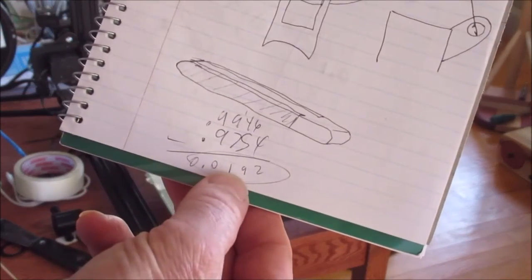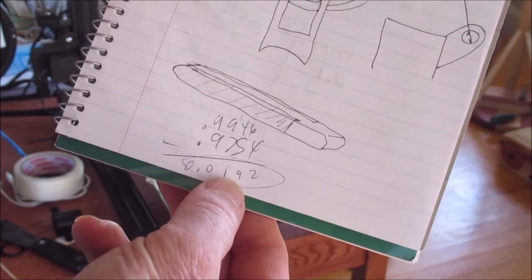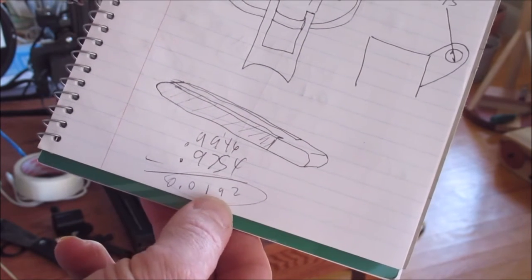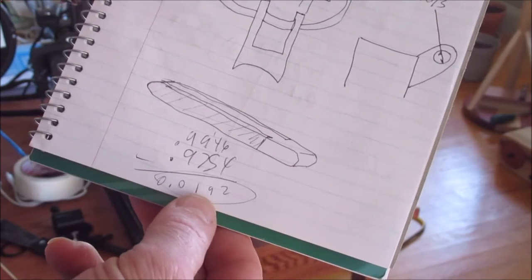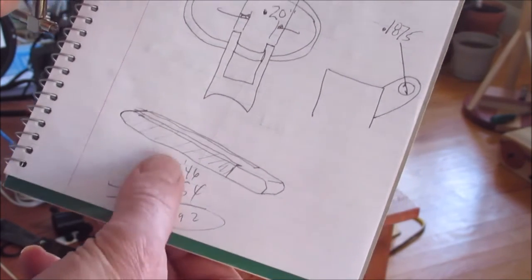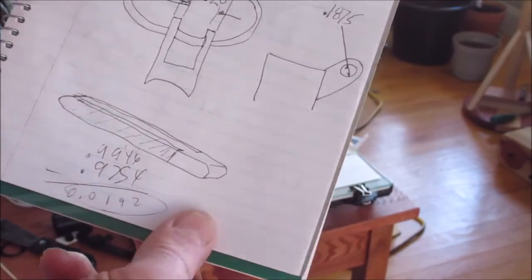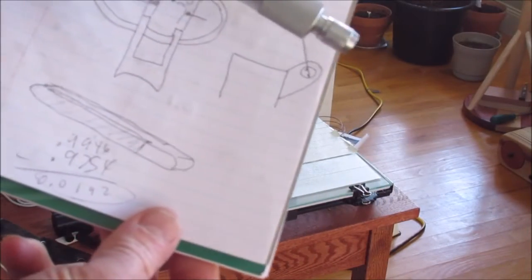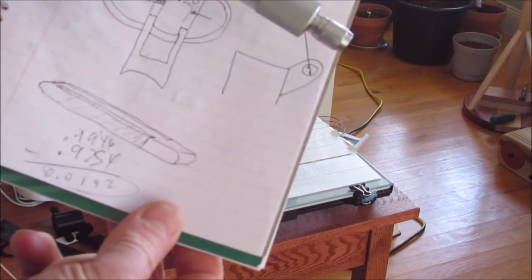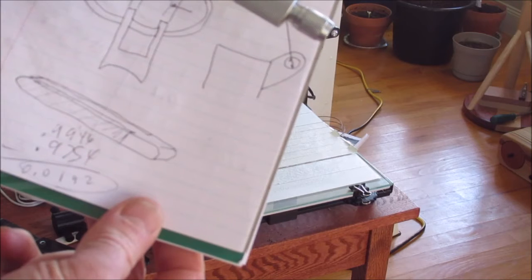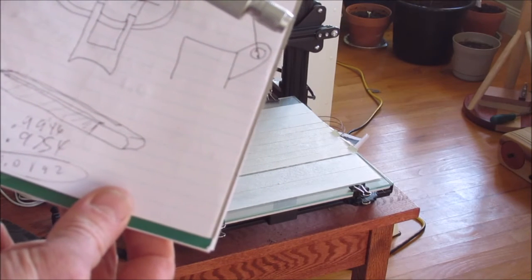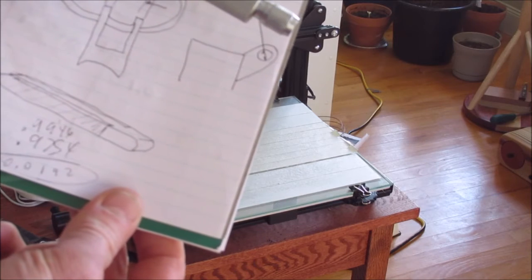I'm getting actually 19.2 tenths or rounded out 19 thou difference in these diameters. So it should provide me with some sort of a seal. Not a very good one, but I should be able to get some pumping action out of that pump.